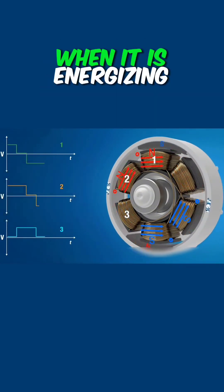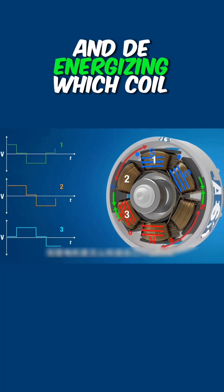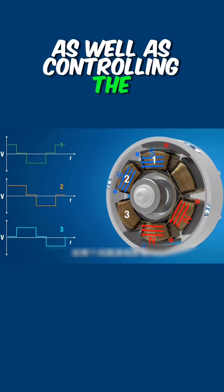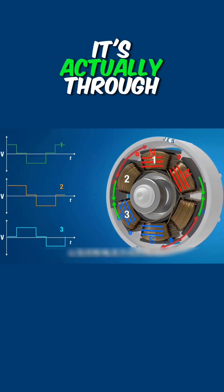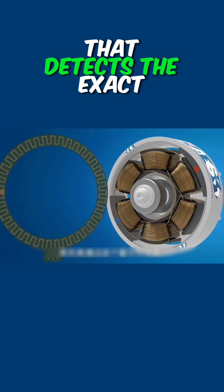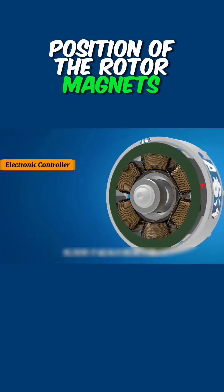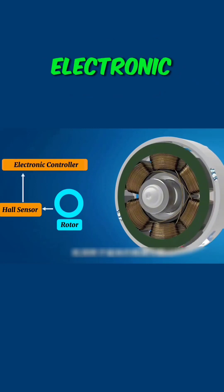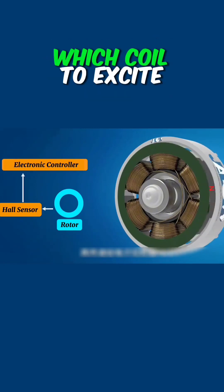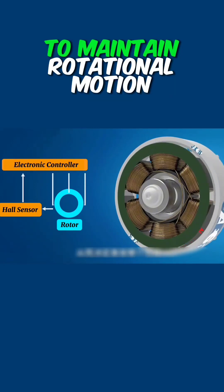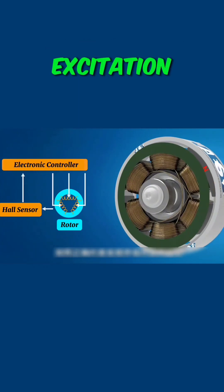But how does the motor know when to energize and de-energize which coil as well as control the direction of the current? It's through this Hall sensor that detects the exact position of the rotor magnets, which is passed to an electronic controller that determines which coil to excite to maintain rotational motion in the correct order.